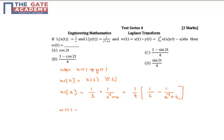So w(t) is the inverse Laplace transform of w(s), which equals 1/4 times the inverse Laplace transform of [1/s - 1/(s²+4)]. Since 1/(s²+4) corresponds to cos 2t.